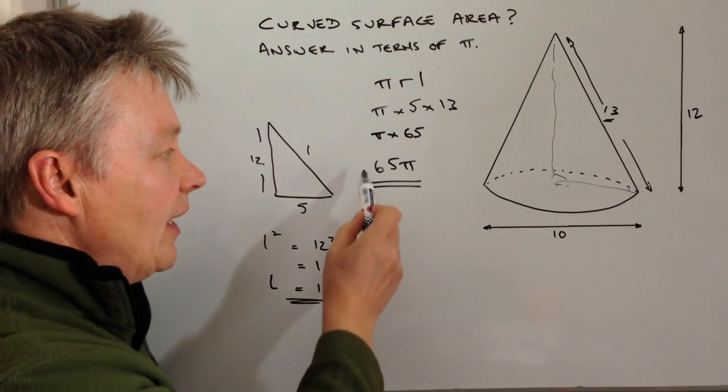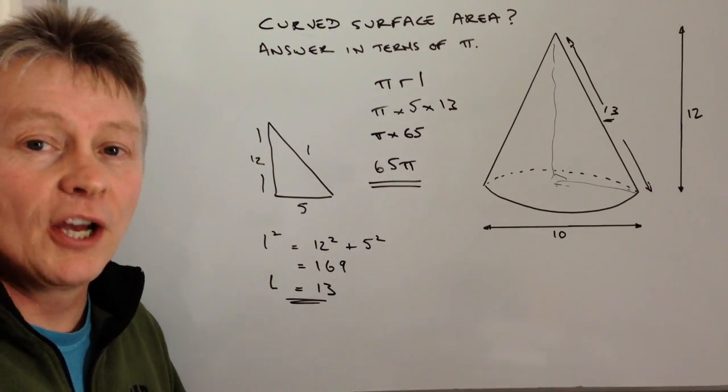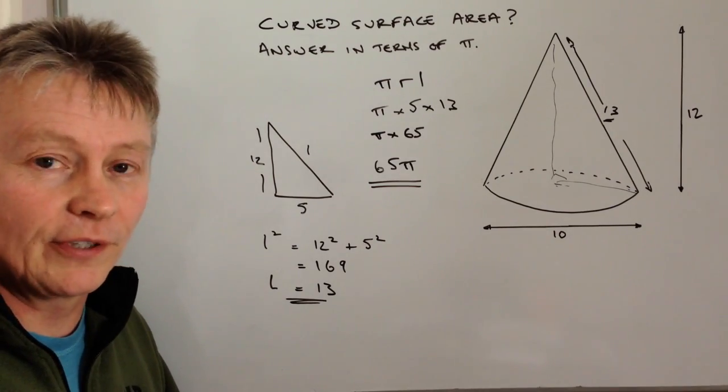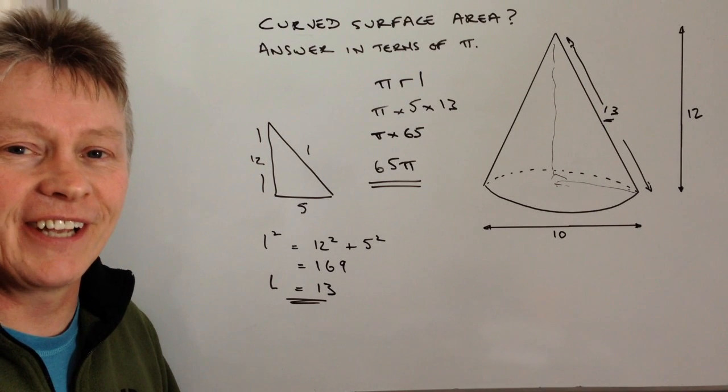If you want to find out the absolute answer, just multiply 65 by π on your calculator and that will give you the decimal equivalent. I hope that's been okay for you. I look forward to seeing you in the next video.